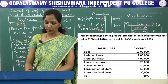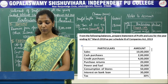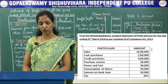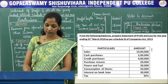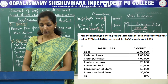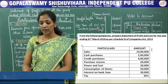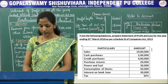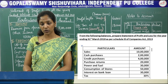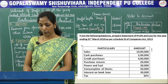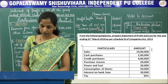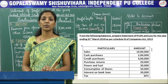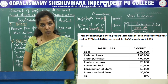From the following balances, prepare statement of profit and loss for the year ending 31st March 2018 as per Schedule 3 of the Companies Act 2013. Sales 10 lakh, cash purchases 2 lakh, credit purchases 4 lakh, purchase return 20,000, power and fuel 30,000, consumption of stores 50,000, interest on bank loan 30,000, tax rate 30%. Here in this problem, all the items are related to the profit and loss statement, so let's solve the problem.